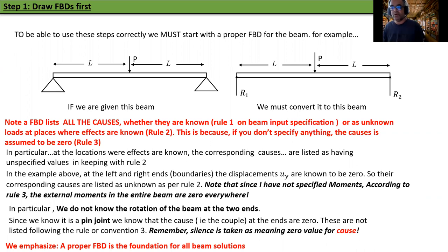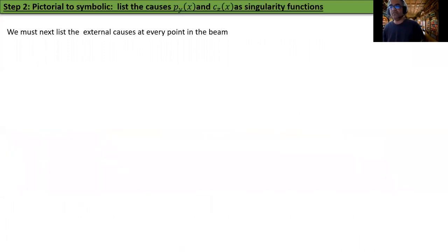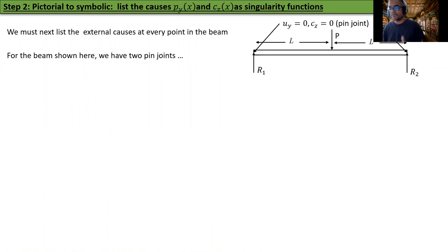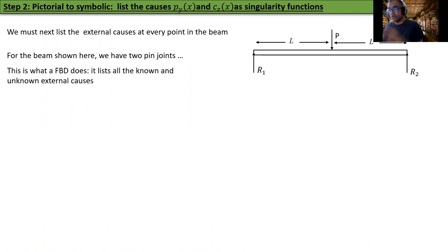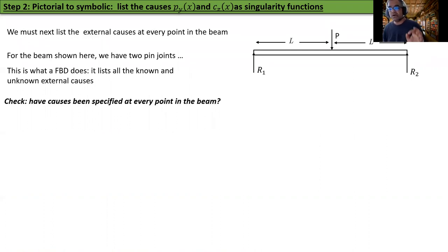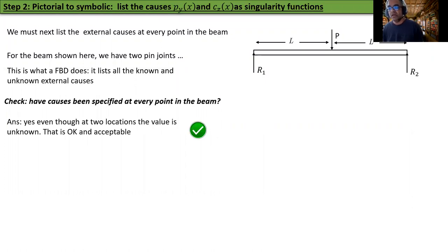Now that you have drawn a free body diagram, what next? We must list the external causes at every point in the beam — that means I must have a list for py(x) and cz(x) as singularity functions. This is Step 2: convert the picture into symbolic form. The beam is shown here with two pin joints. Notice all the causes are listed — I keep emphasizing this point — whether they are known or unknown. First, check: have the causes been specified at every point in the beam? Points where nothing is specified are automatically zero — this looks okay, and is acceptable.